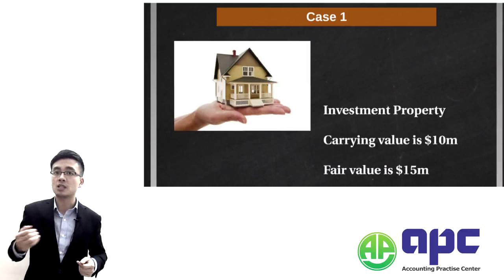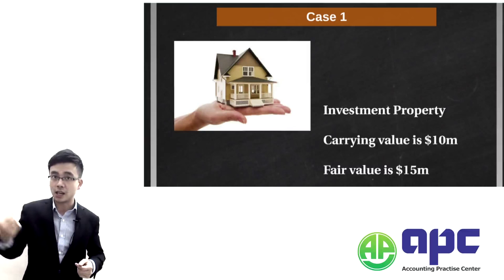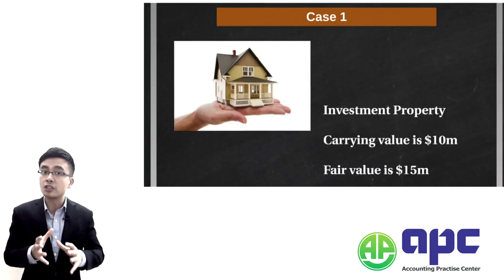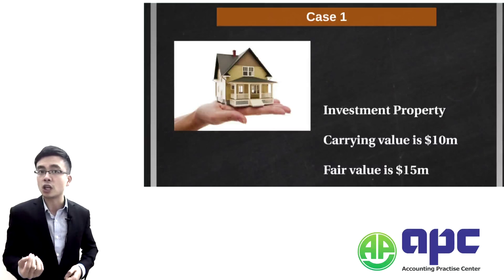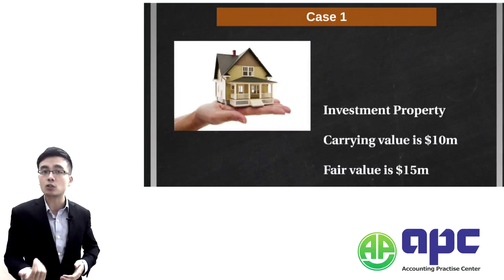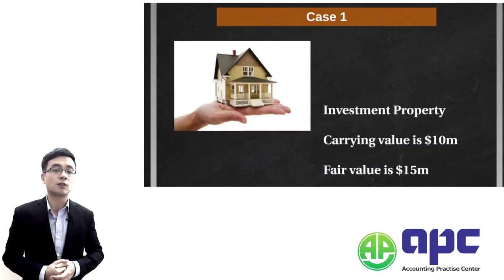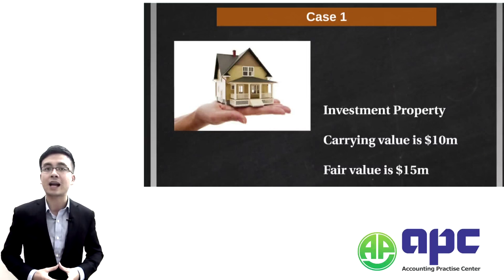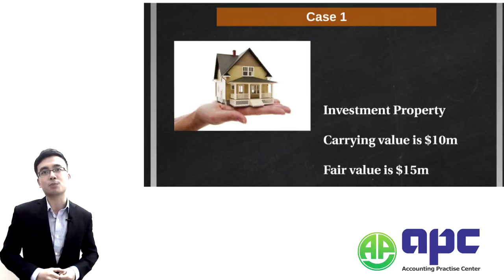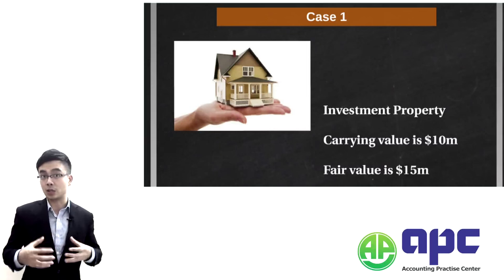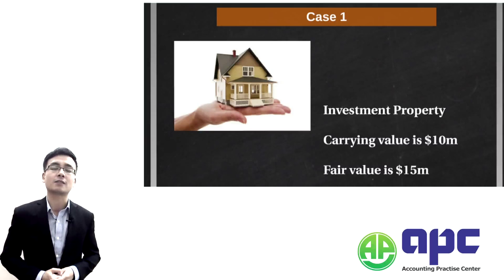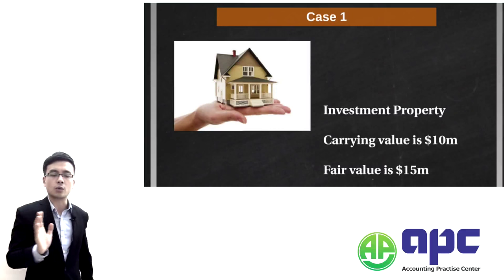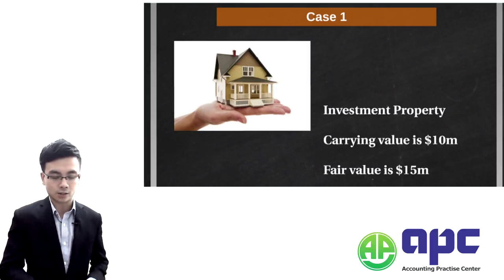And from which the future economic benefit will flow into the entity, because our company is selling those properties. By selling those properties we get cash from customers, generating future economic benefit. We're going to show that as the asset if the probability of receiving that cash from the customer is greater than 50%.